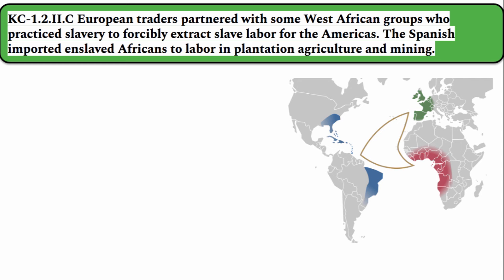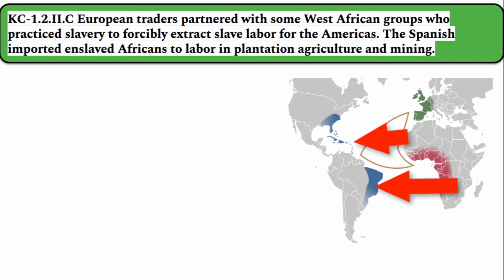European traders partnered with some West African groups who practiced slavery to forcibly extract slave labor for the Americas. The Spanish imported enslaved Africans to labor in plantation agriculture and mining. Over time, native labor would not be adequate to meet the demands of colonization. A couple of reasons for this: native people were being decimated by disease, and the growth of the plantation agriculture system led to a huge demand for labor. European powers took advantage of the fact that some powerful African tribes had developed a practice of kidnapping and selling other African people into slavery. Coastal slave markets in West Africa developed, and millions of West Africans were sent to the Western Hemisphere along the horrific Middle Passage.